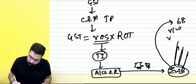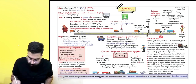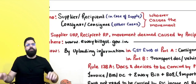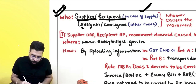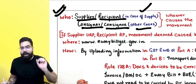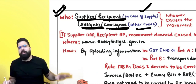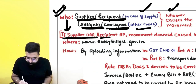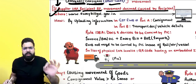E-way bill is covered under Section 68 read with Rule 138, 138A, 138B, 138C, 138D, and 138E. E-way bill is required not only in case of supply — it is for movement. It is to be generated by the supplier, recipient, consignor, or consignee — whoever causes the movement. If supply is understood, movement is always deemed to be caused by the recipient.